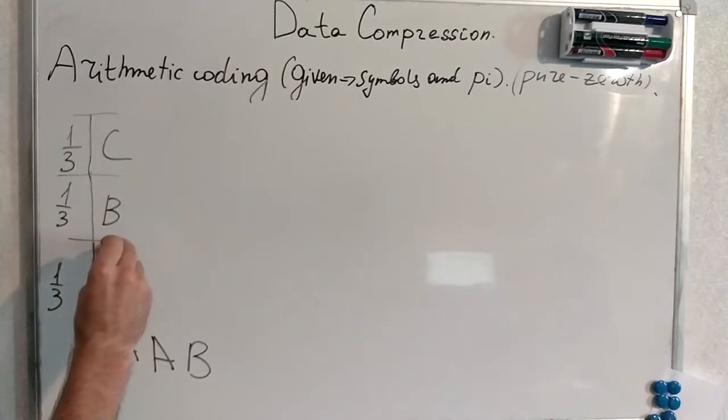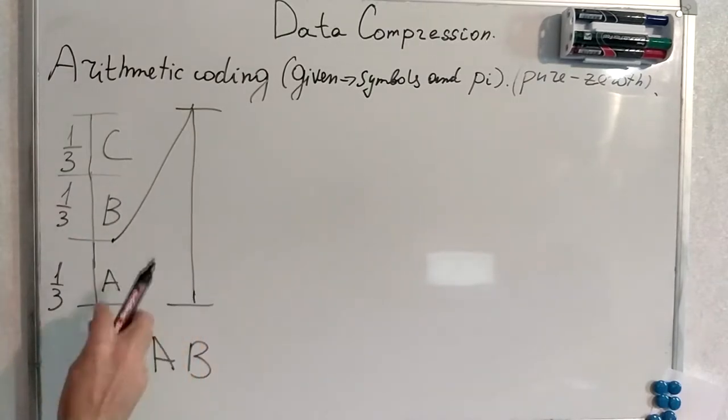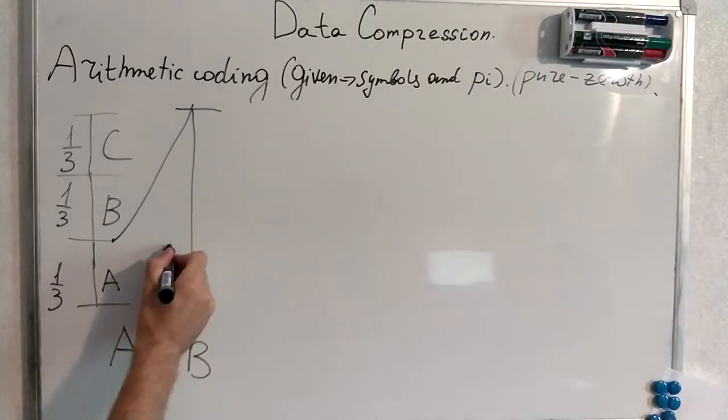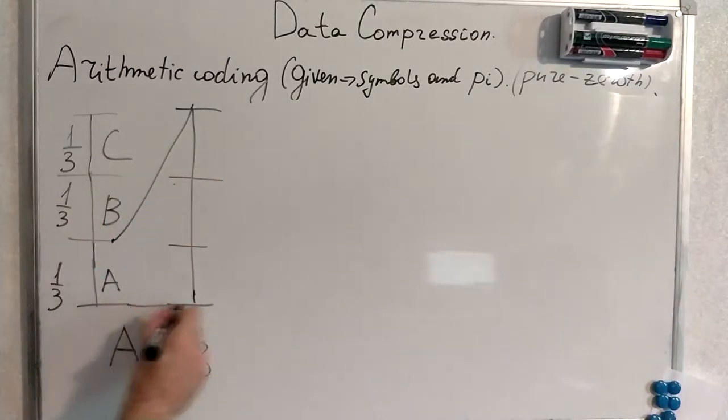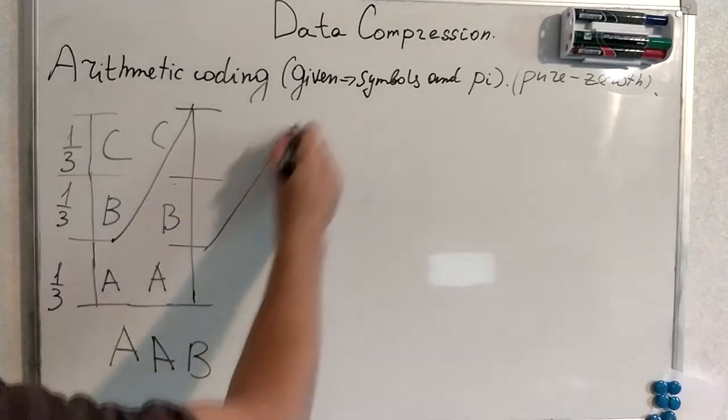A comes. Thus we expand the interval for A and re-subdivide this interval corresponding to A once again where one-third will be for A, one-third will be for B and one-third will be for C. Second A comes.